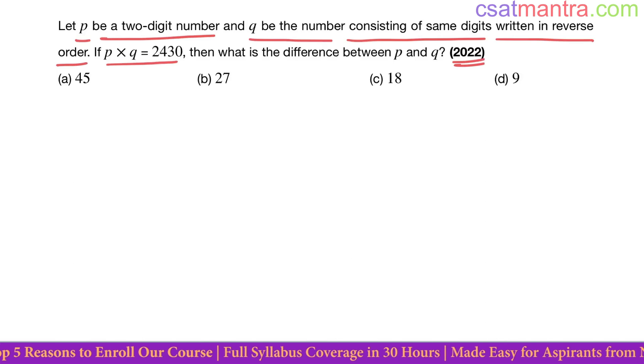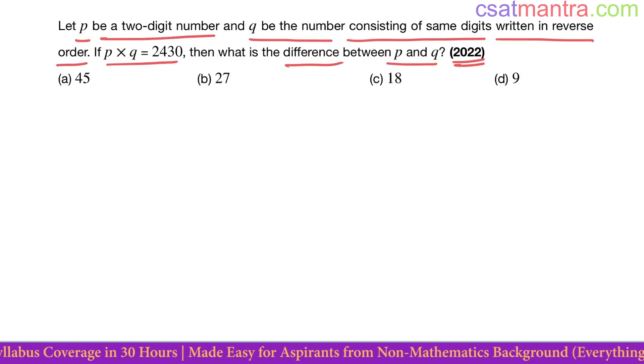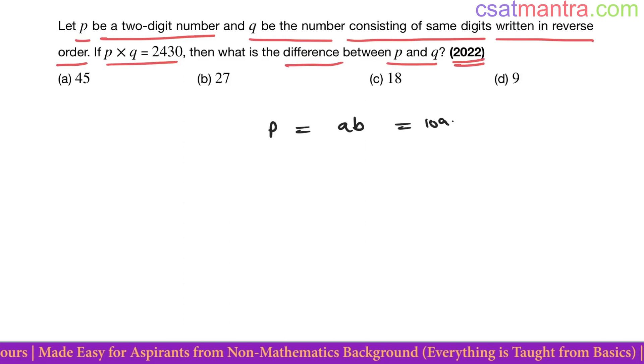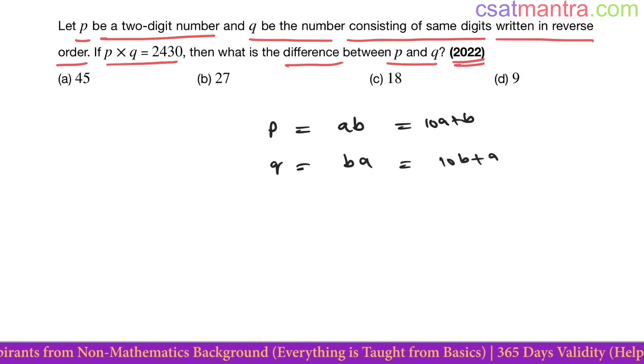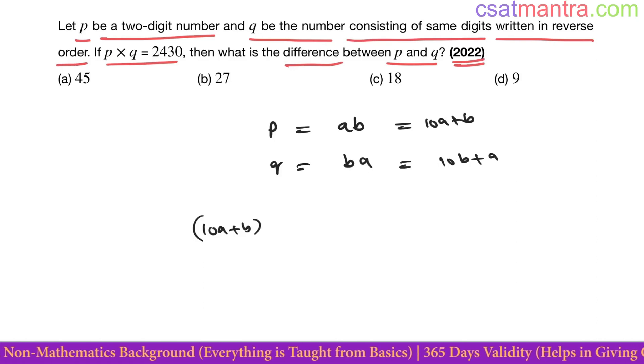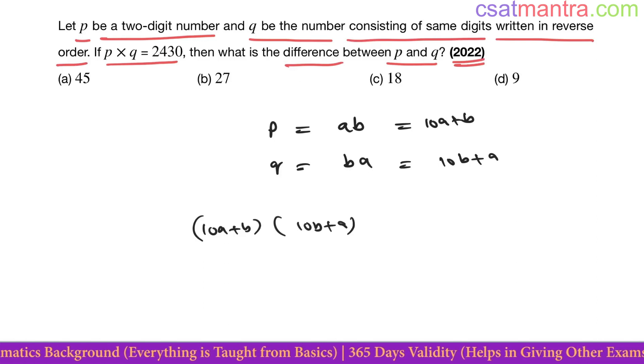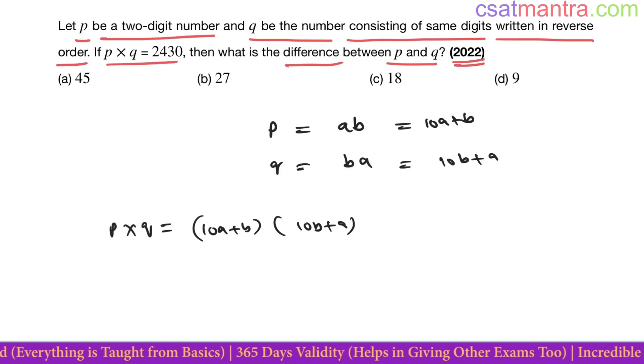See, this problem cannot be solved conventionally. Let's say if you take p as ab, a two-digit number, that is 10a plus b. Q is ba, then 10b plus a. Now 10a plus b into 10b plus a, that is p into q, this is equal to 2430.